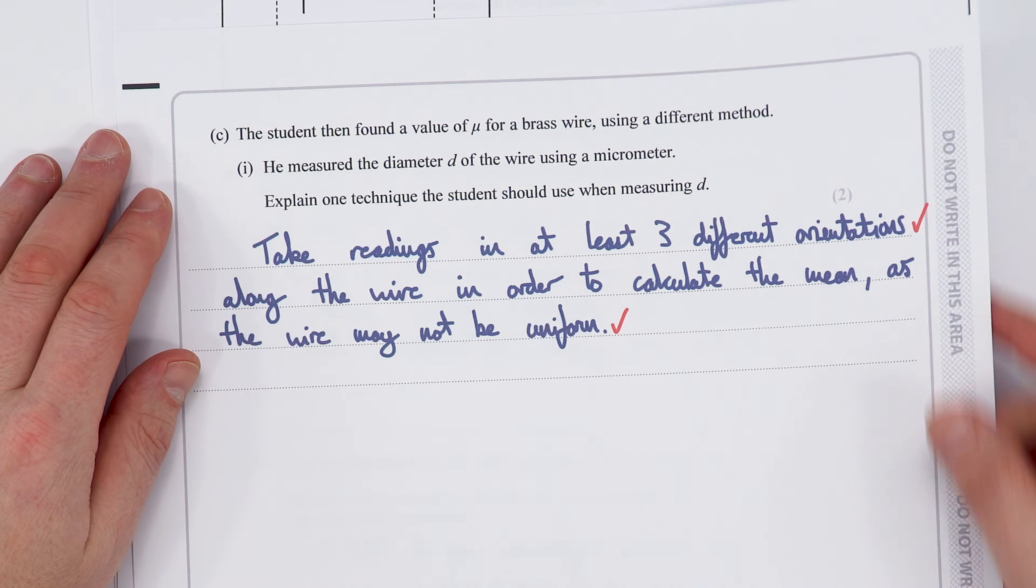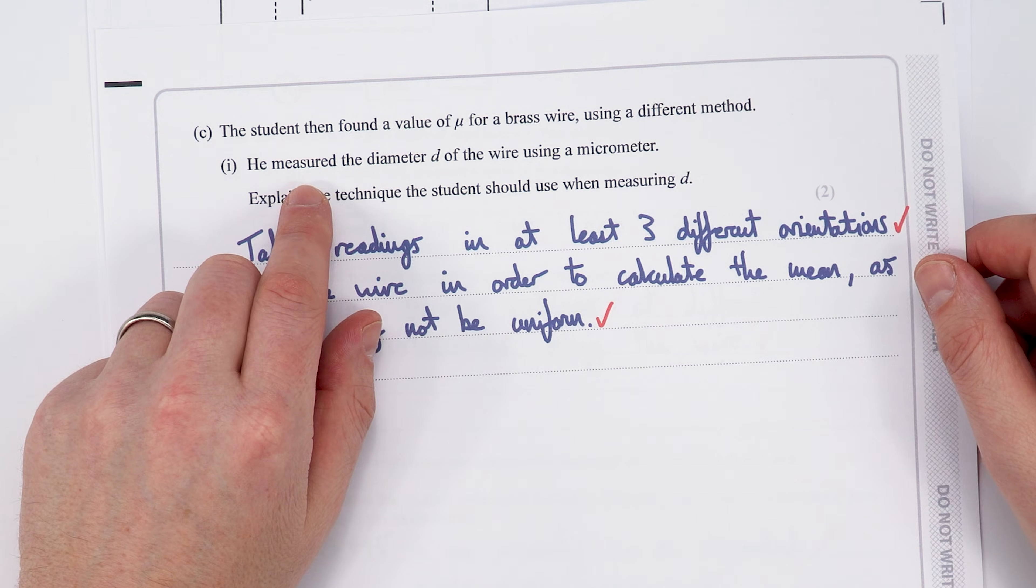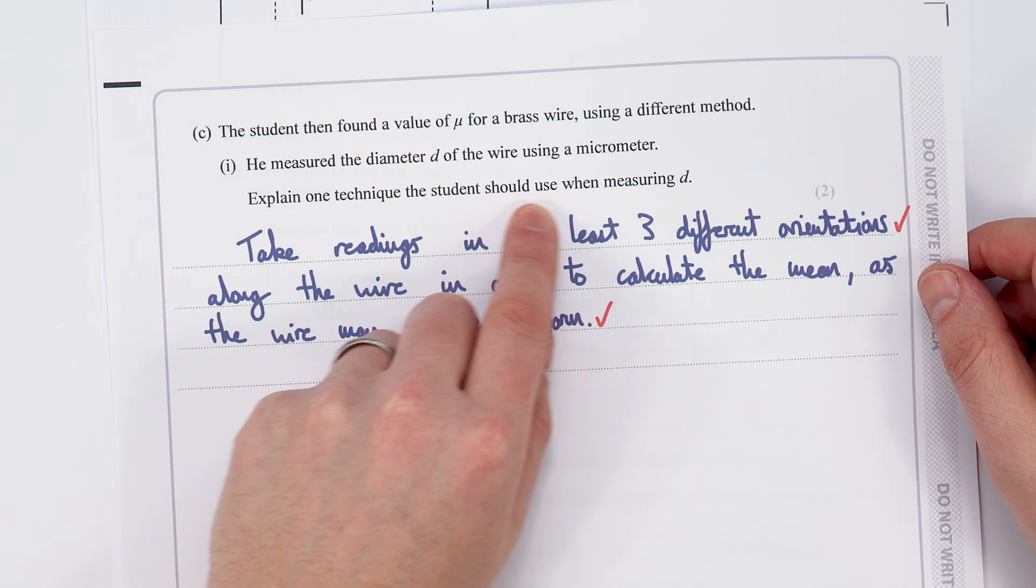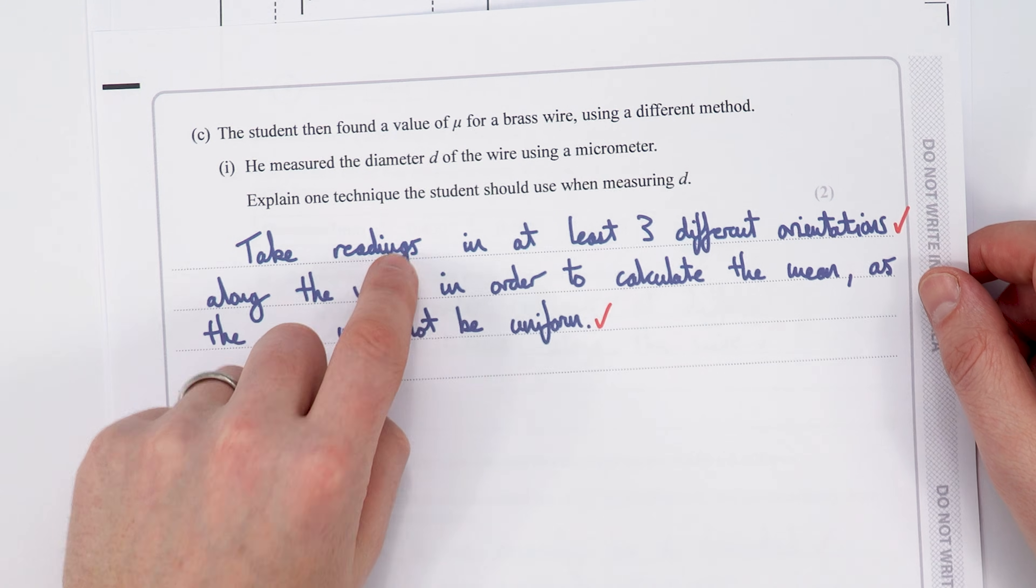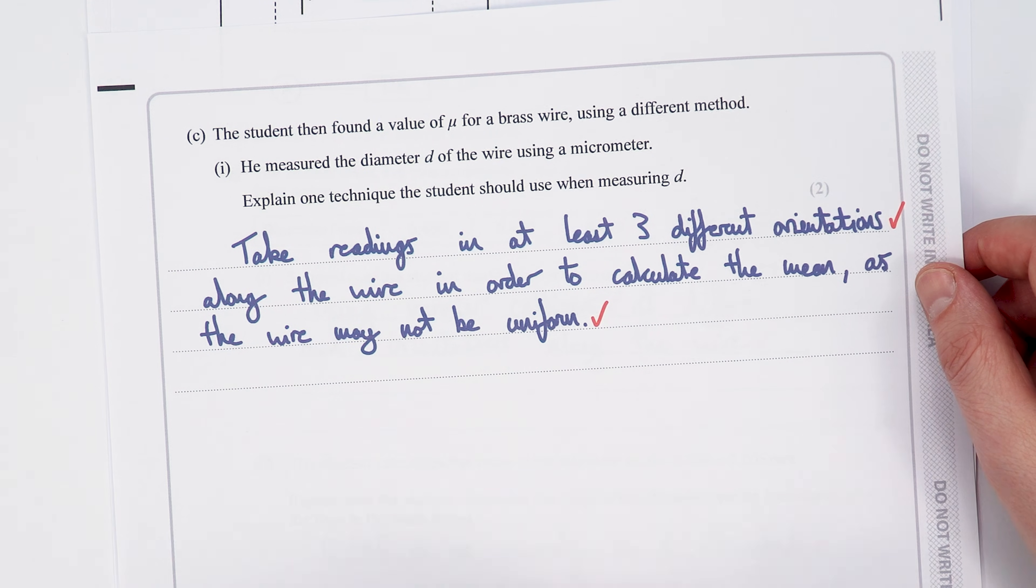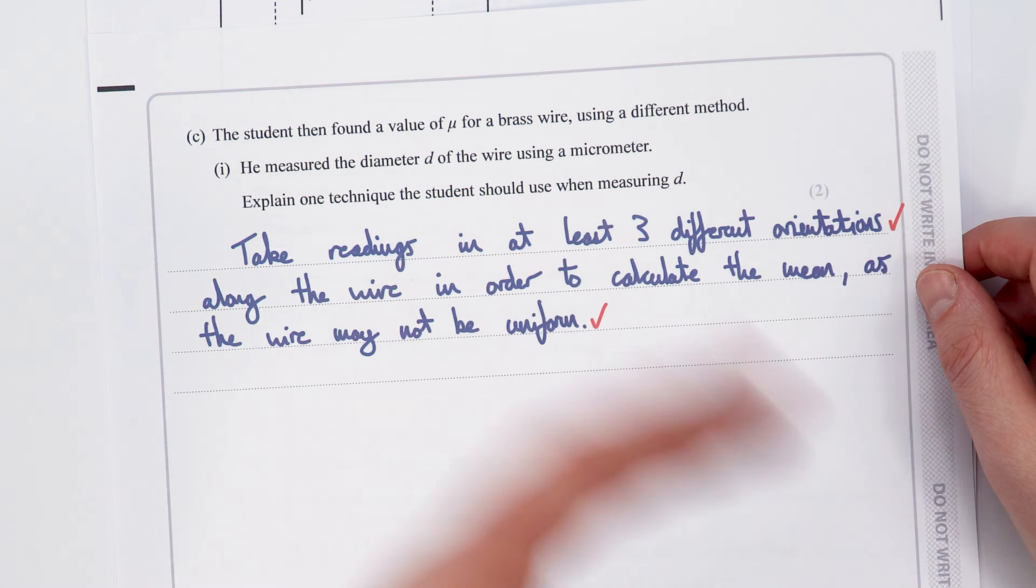I then look to this question from a different exam board. This one says the student measures the diameter of the wire using a micrometer. Explain one technique the student should use when measuring d. So take the reading in at least three different orientations along the wire to calculate the mean and that's because the wire might not be uniform and this ensures it's got a circular cross-sectional area so we can use the equation pi d squared over four for the area.